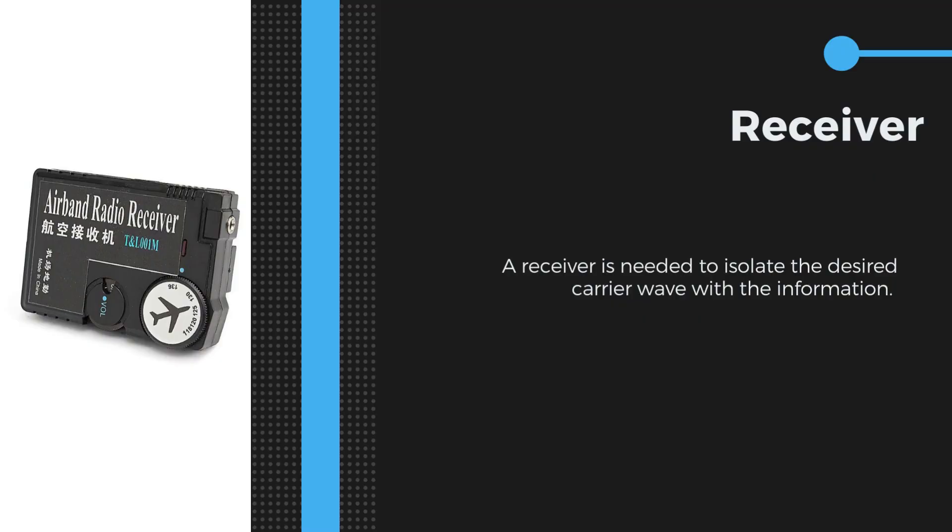Similarly, a receiver is needed to isolate the desired carrier wave with the information. It separates the information signal from the carrier wave sent by the transmitter.